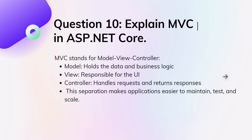Tenth question: explain the MVC pattern in ASP.NET Core. MVC stands for Model, View, and Controller. The Model holds the data and business logic, the View is responsible for the UI, and the Controller handles requests and returns responses. This separation makes applications easier to maintain, test, and scale.